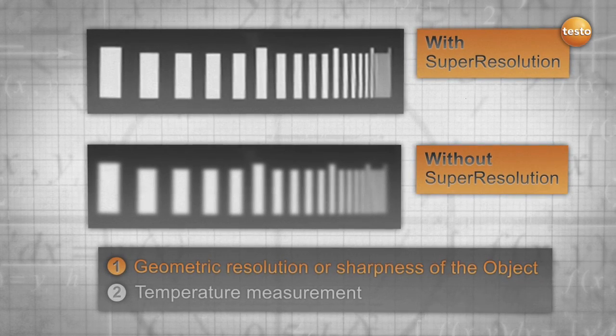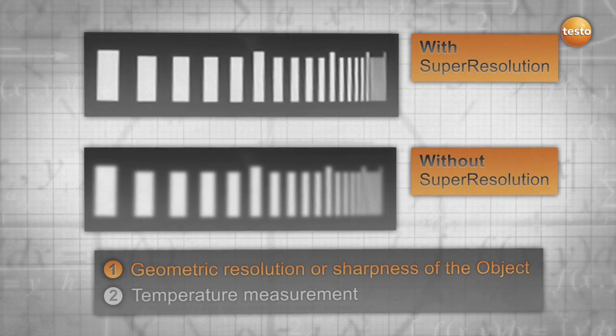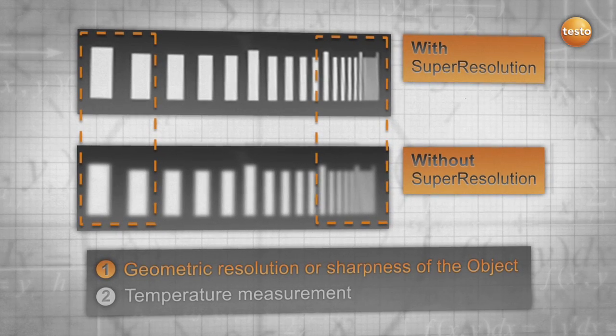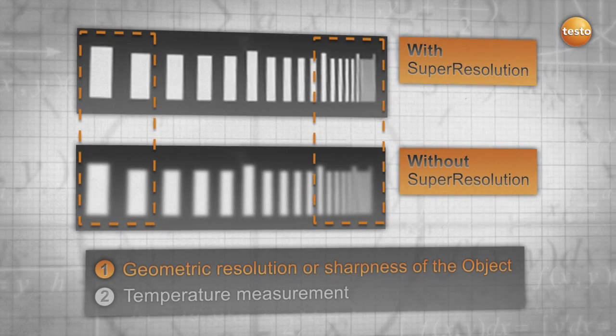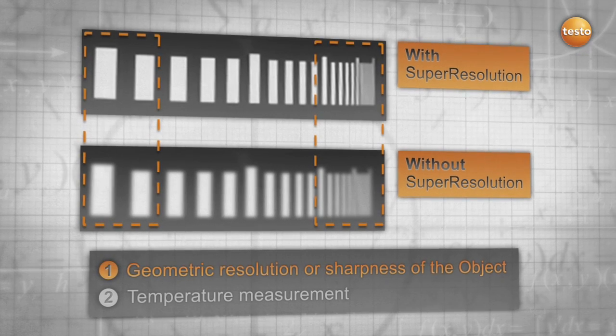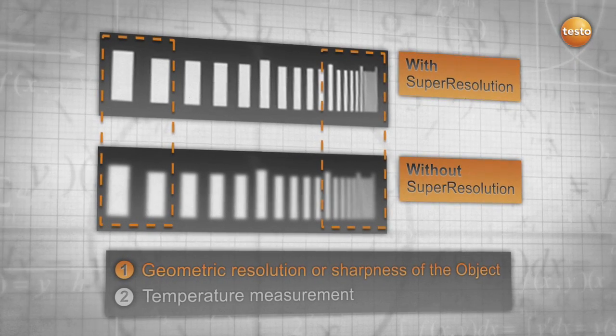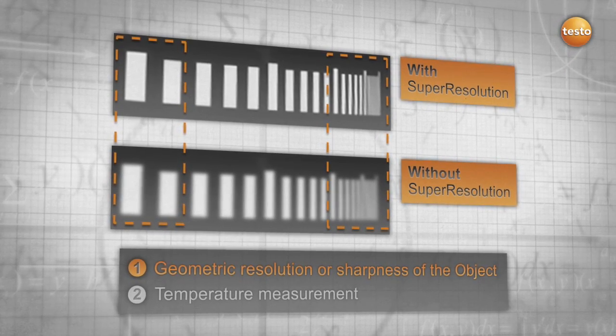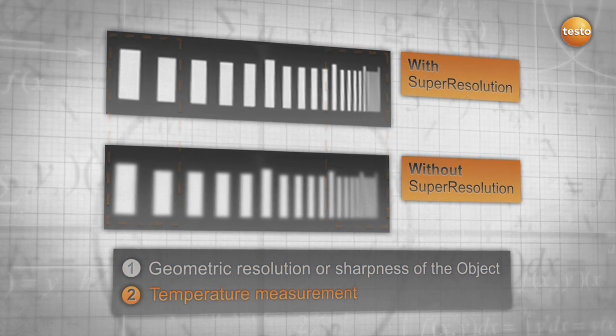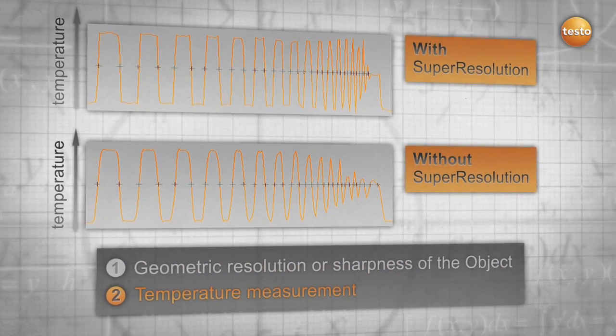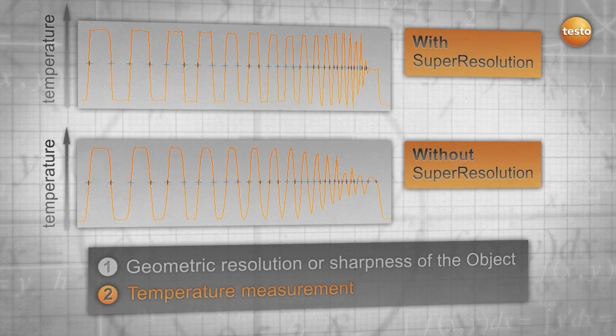Without Super Resolution, you get a blurry image. The smaller and denser the slots, the more blurry the image. With Super Resolution, you get a sharper and more detailed image. A similar effect can be observed when we analyze the accuracy of the measured temperature.